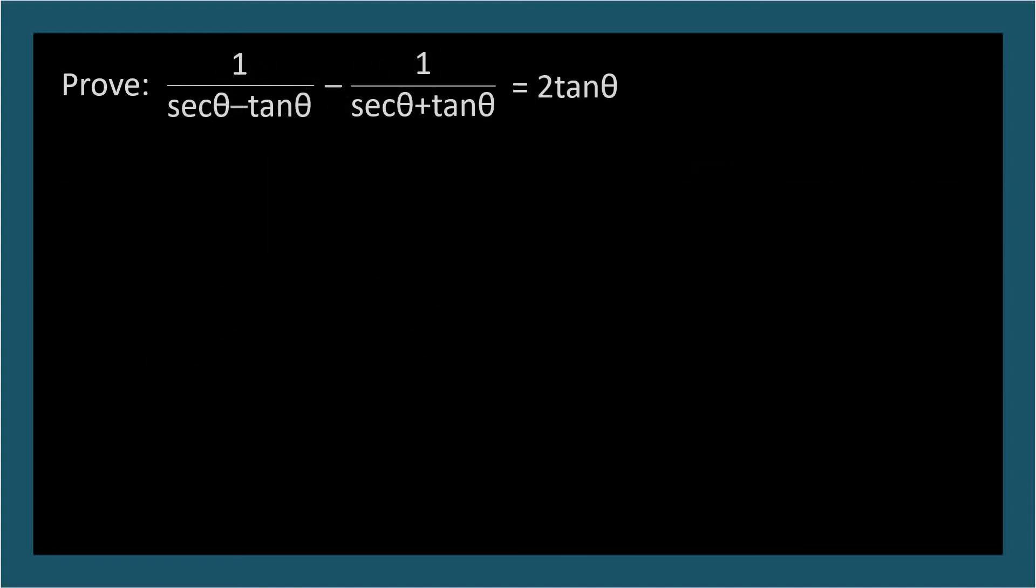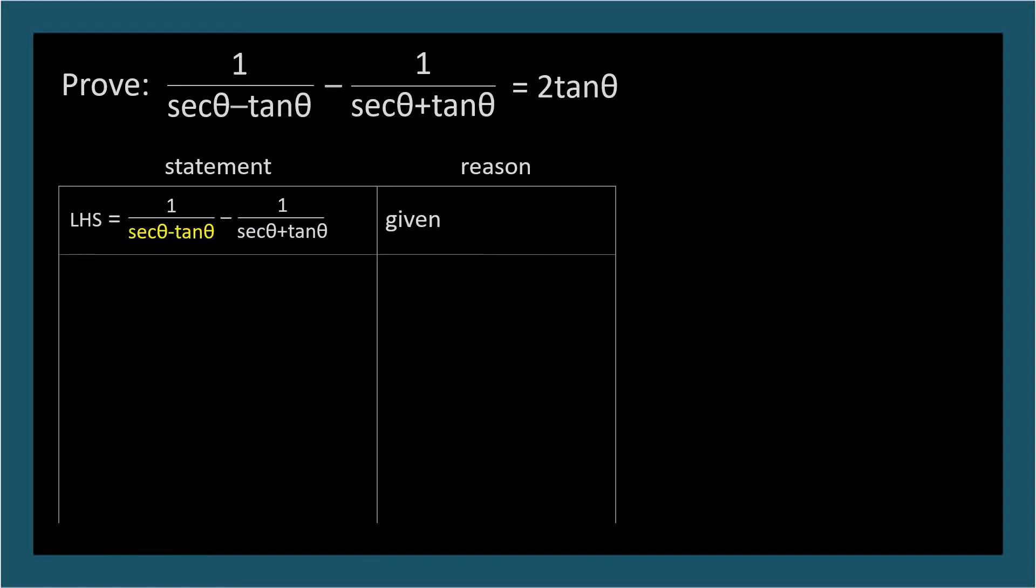Here's the last problem. Prove 1 over secant theta minus tangent theta minus 1 over secant theta plus tangent theta equals 2 tangent theta. Well, the left-hand side is clearly more complex, so let's start there and simplify.